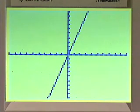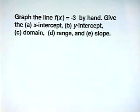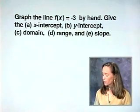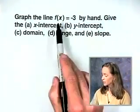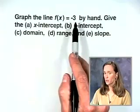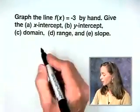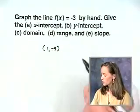We move on to the final item in this section: two special cases of lines — horizontal lines and vertical lines. Horizontal lines have slope 0. They rise 0 units for any amount of run. Let's graph the line f of x equals negative 3 by hand. For any x value, the y coordinate will always be negative 3.